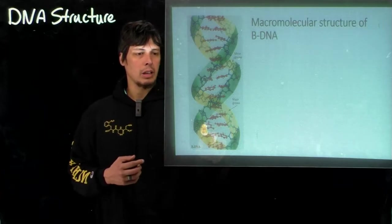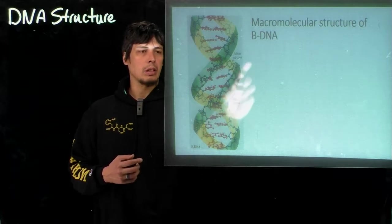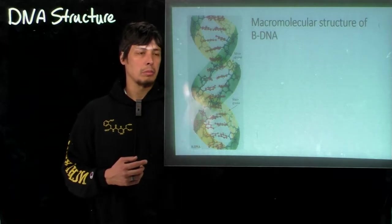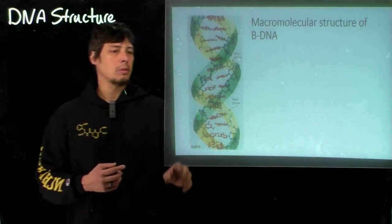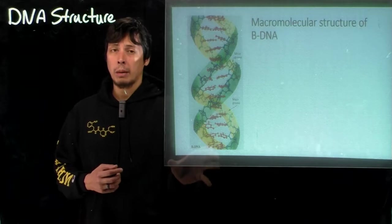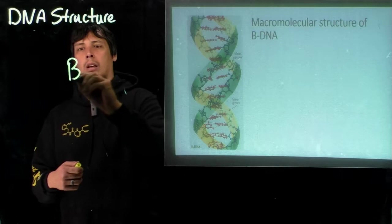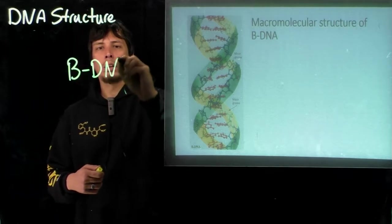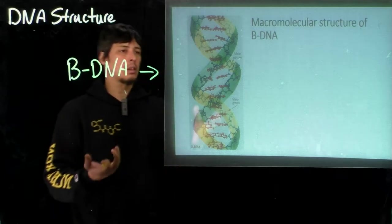There's the base pairs between the nitrogenous bases on the complementary strands, between the template and the complementary strands. And then the way this arranges itself for the most common form of DNA, which is known as B-DNA, the structure looks like this.